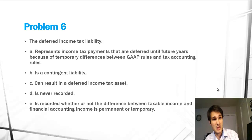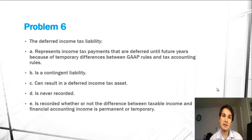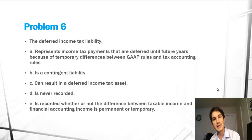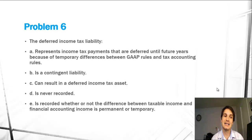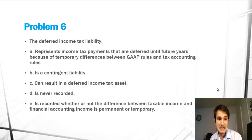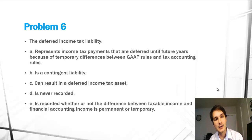The question reads: the Deferred Income Tax Liability — A represents income tax payments that are deferred until future years because of temporary differences between GAAP rules and tax accounting rules. B is a contingent liability. C can result in a Deferred Income Tax Asset. D is never recorded. And E is recorded whether or not the difference between taxable income and financial accounting income is permanent or temporary.